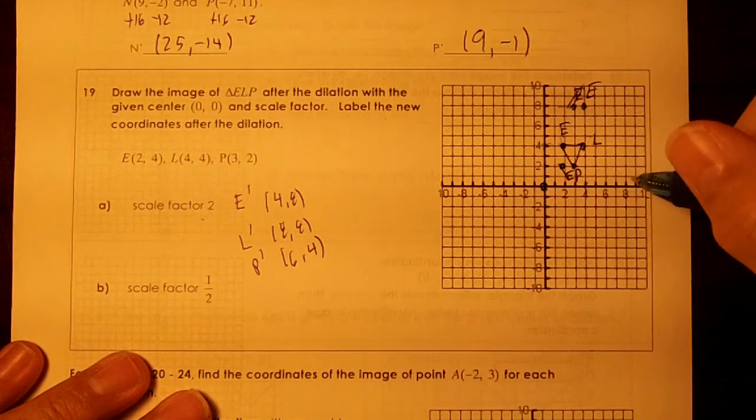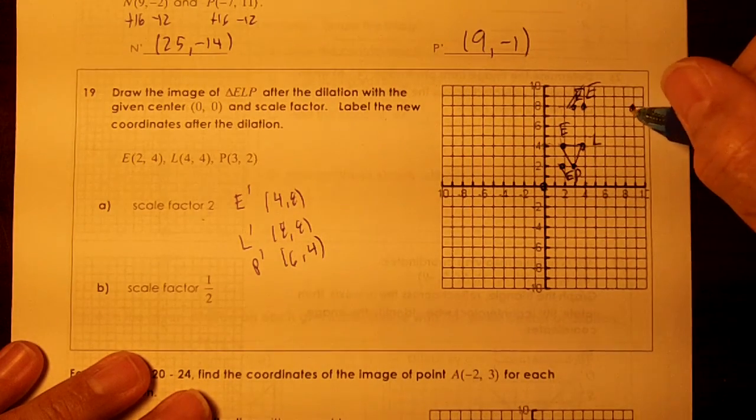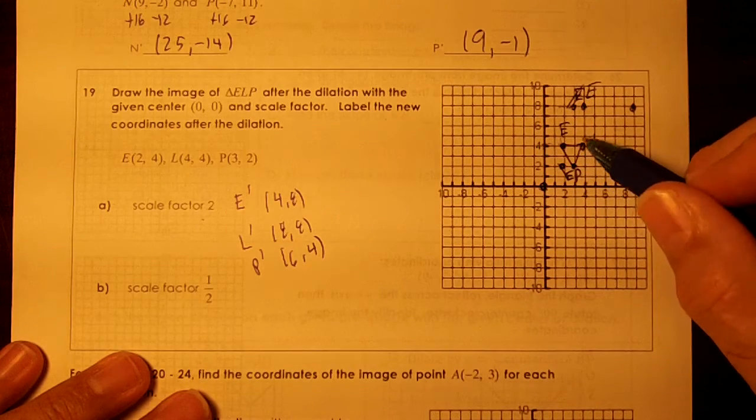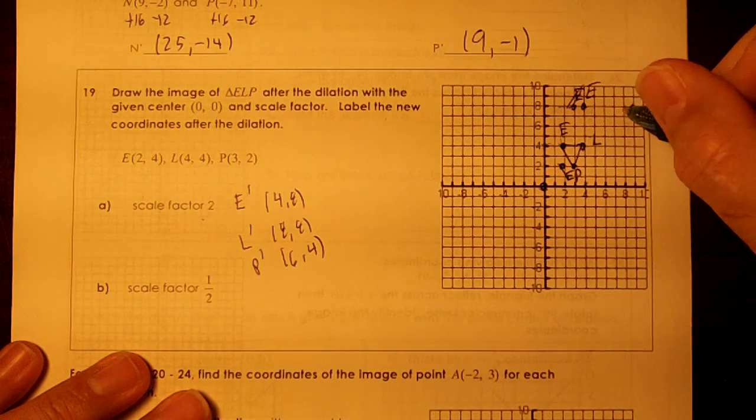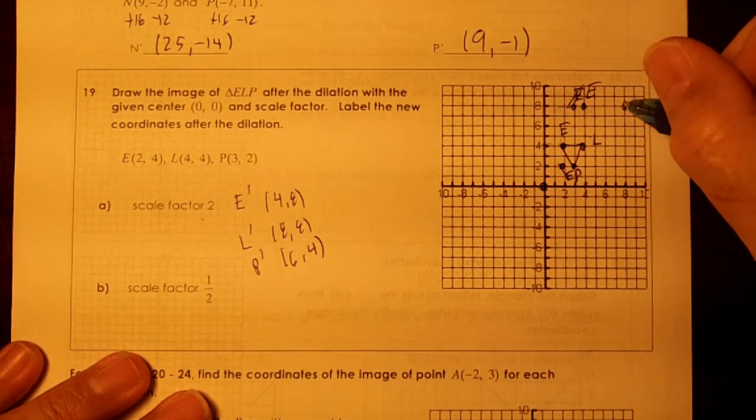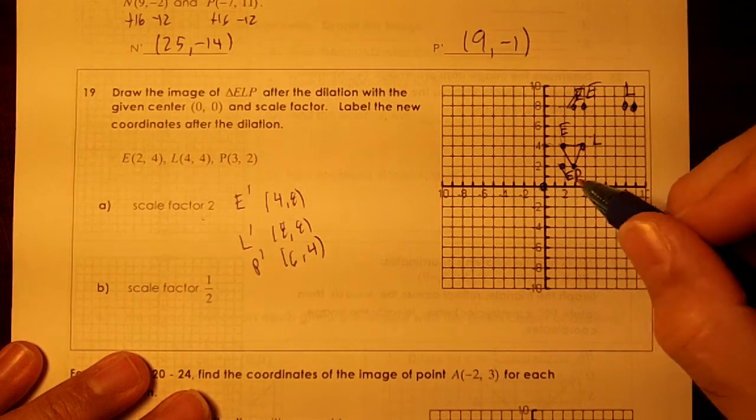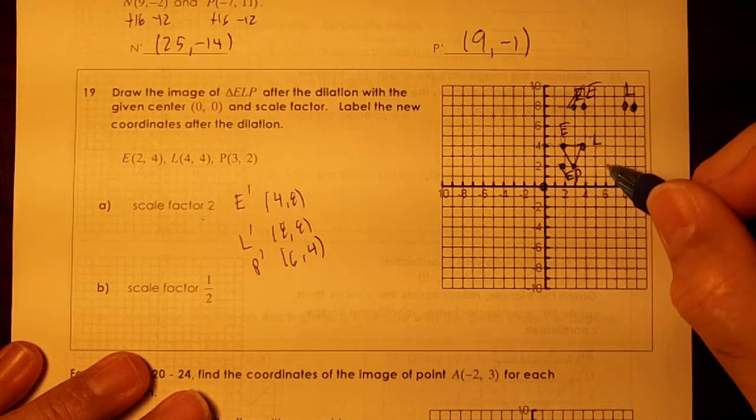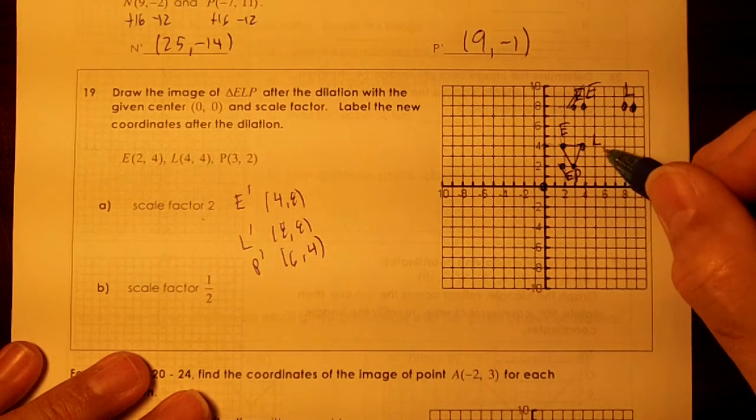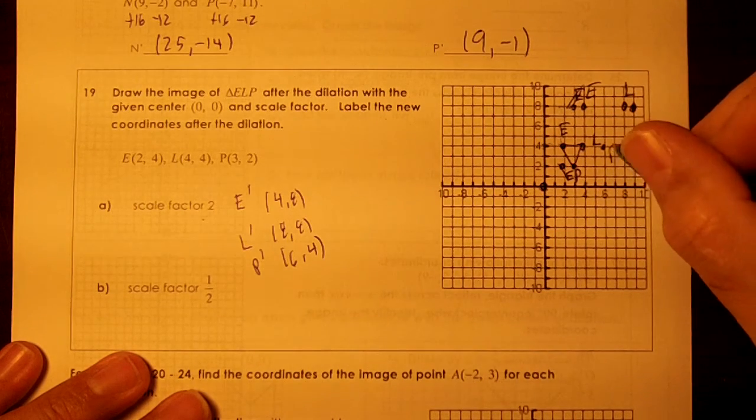And then my new L is going to be 8,8. Look what happens. Up 4 over 4, up 4 over 4, right at 8,8 right here. So this is L. And then to get to my P, I went over 3 up 2, so I'm going to go over 3 up 2 again. I'll be right here with the P, won't I?